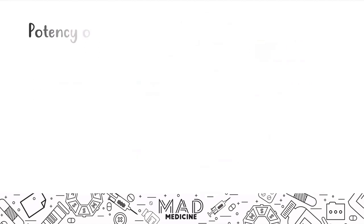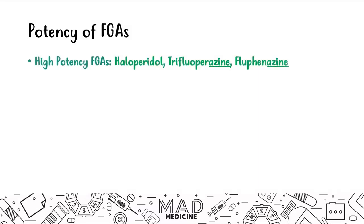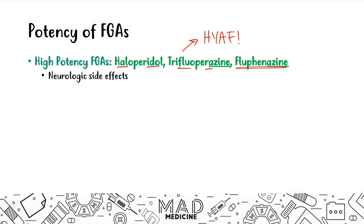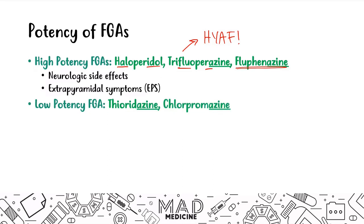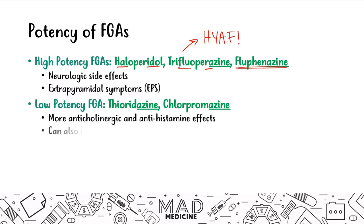First-gen antipsychotics have two main types. High potency agents include haloperidol, trifluoperazine, and fluphenazine — these have the most significant side effect profile of any antipsychotics and are very high yield. Low potency agents are thioridazine and chlorpromazine. The high potency drugs produce the most neurologic side effects and extrapyramidal symptoms, while the low potency drugs produce more anticholinergic, anti-adrenergic, and alpha-1 blockade effects.